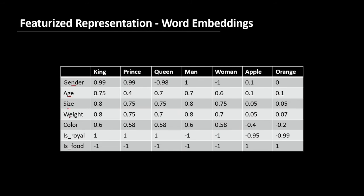Imagine that we have features associated with every word like gender, age, size, weight, etc., and the values of these features for every word are given in the form of a vector. If we represent words in this form, then the computer can know that the words 'apple' and 'orange' are closely related to each other because the vector values for both these words are very close to each other — you can see they are almost close to 0, both 0.1 and 0.05. Similarly, the values of 'king' and 'prince' are also closely related, while the values of 'king' and 'orange' are quite different.